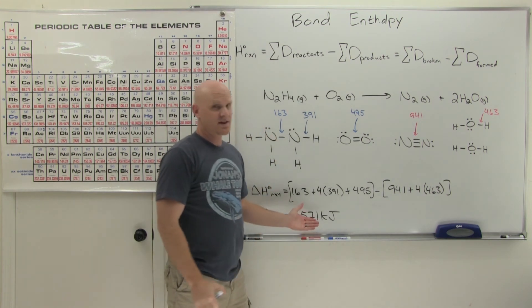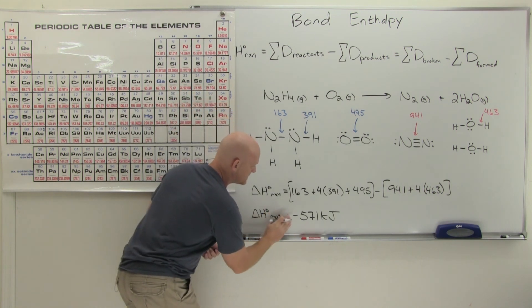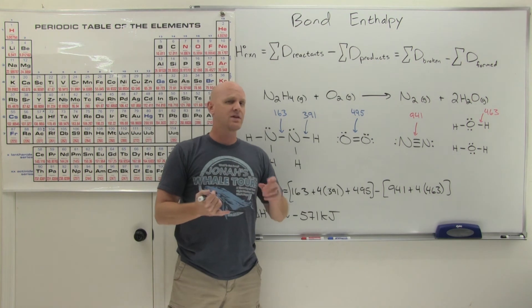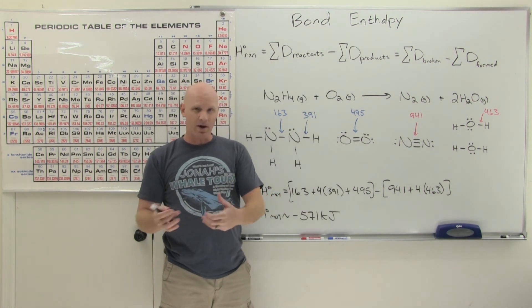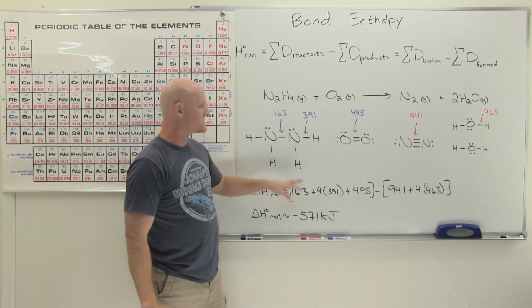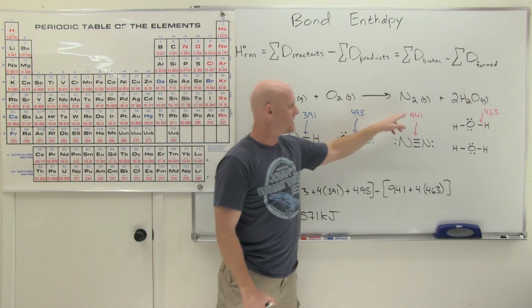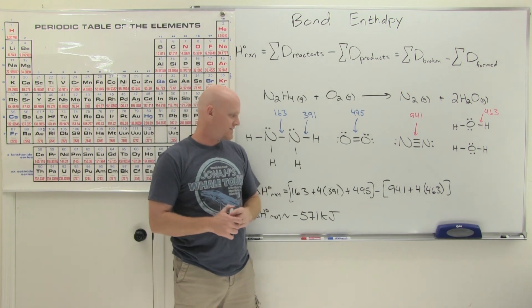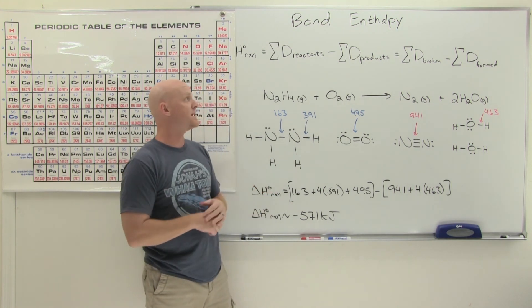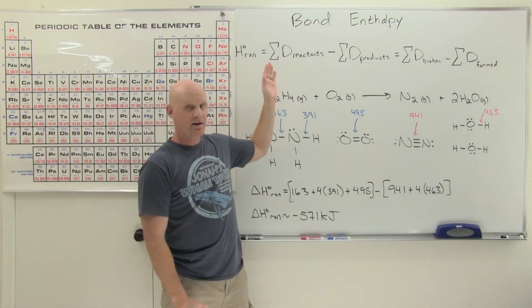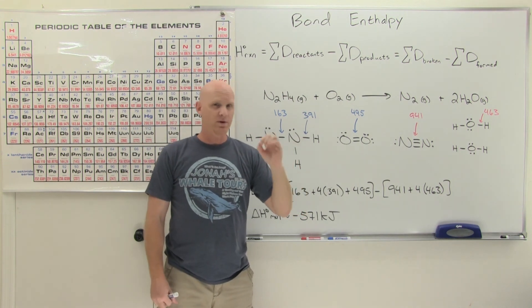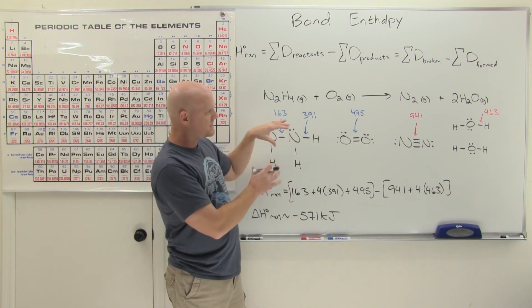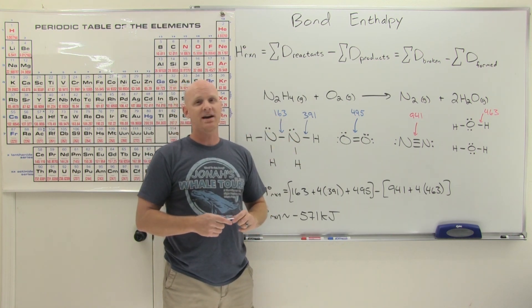That's a nice plug-and-chug calculation. Once again, this method is more approximate — if you use enthalpies of formation or Hess's Law you get an exact number, but bond energies vary slightly from molecule to molecule so this is an approximation. The key conceptual takeaway: bond breaking is endothermic, and bond making is exothermic — that's definitely something to take away from this lesson.